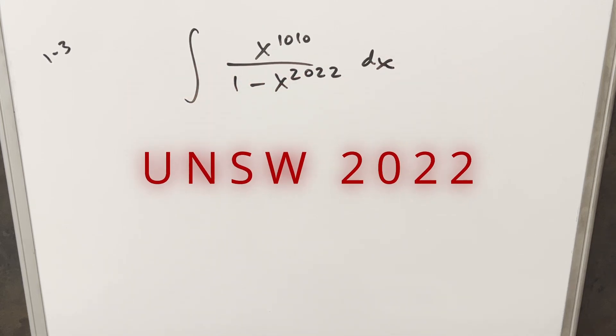Hey, we have here today a pretty quick integral on the board from the UNSW integration bee. This was from knockout round one, problem three. We have the integral of x to the 1010 over 1 minus x to the 2022 dx.